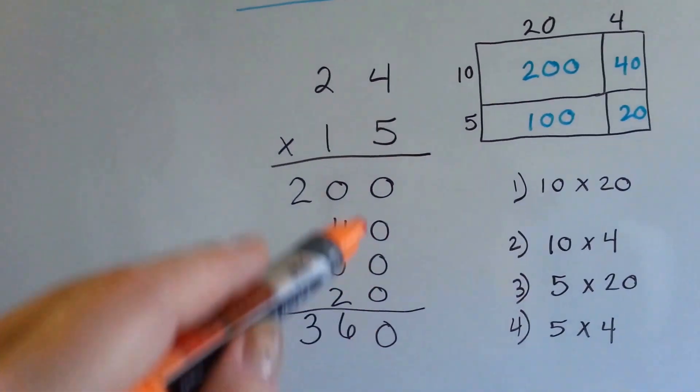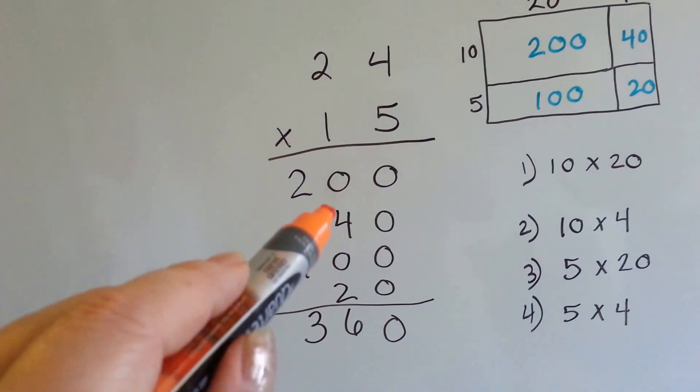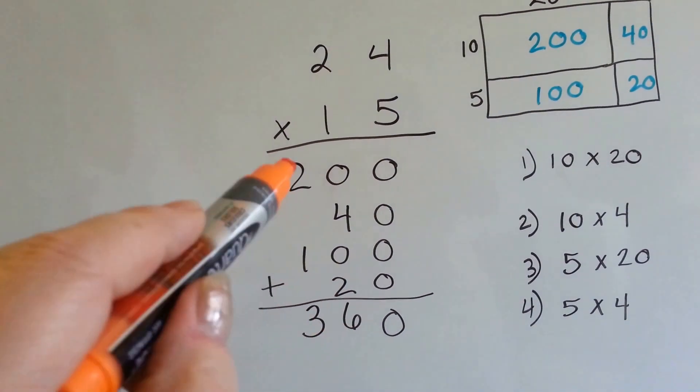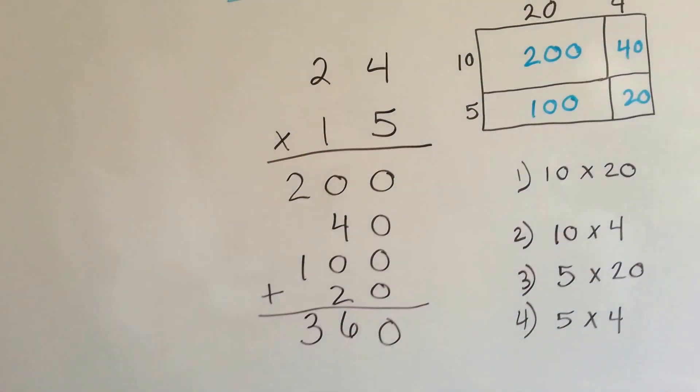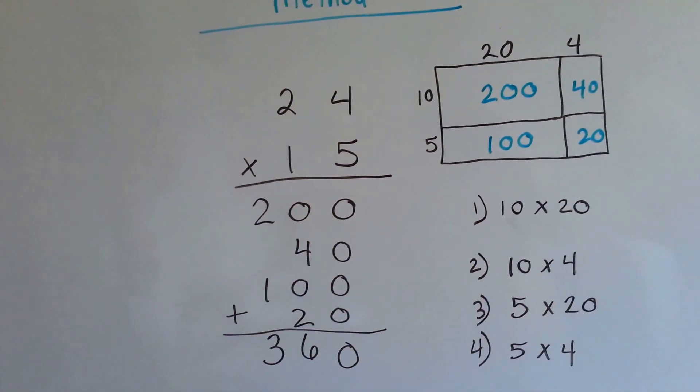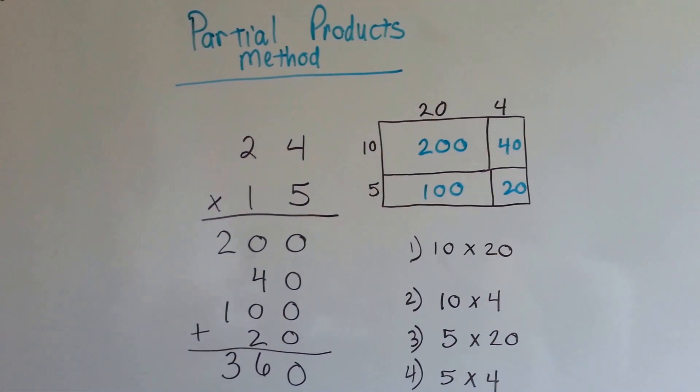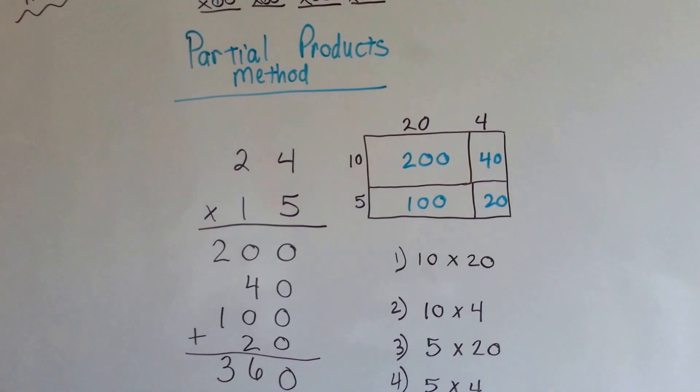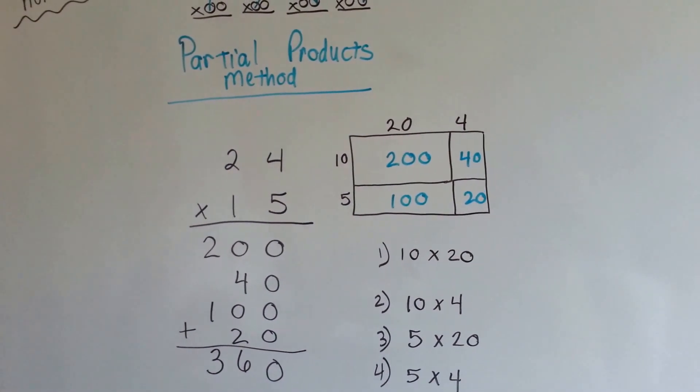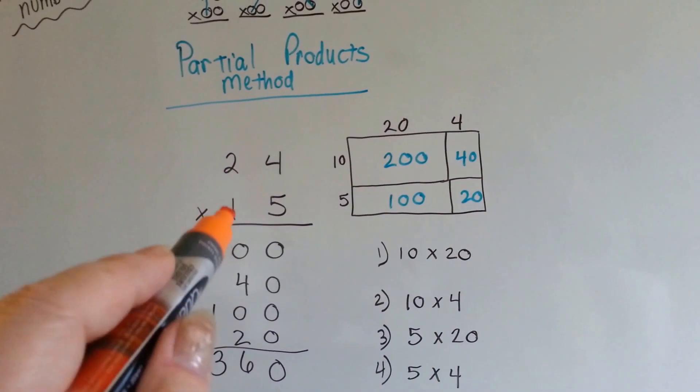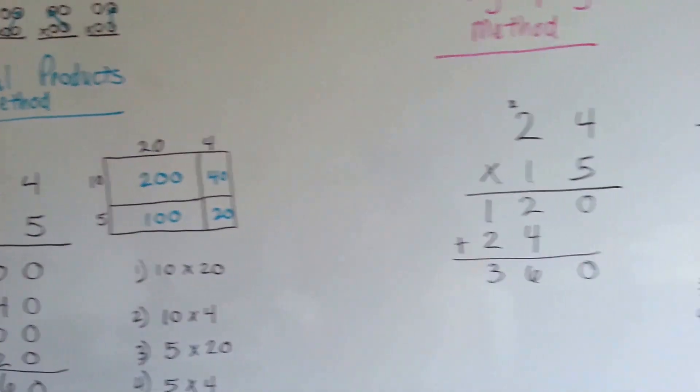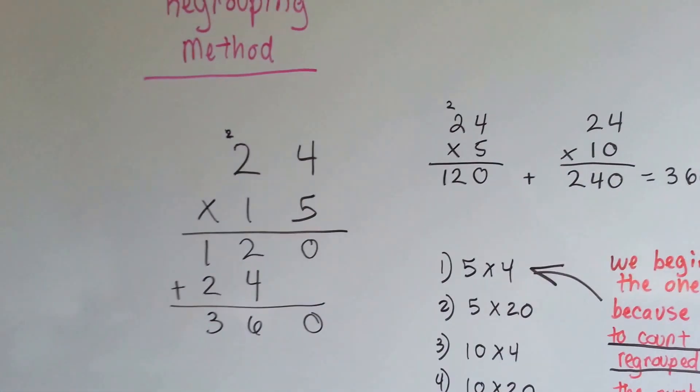When we add them all up, all these zeros are 0, 4 and 2 is 6, and 2 and 1 is 3, and our answer is 360. So that's how you do the partial products method. You can watch my videos, number 28 and 29, to see this method and the regrouping method in a little more detail with more examples.